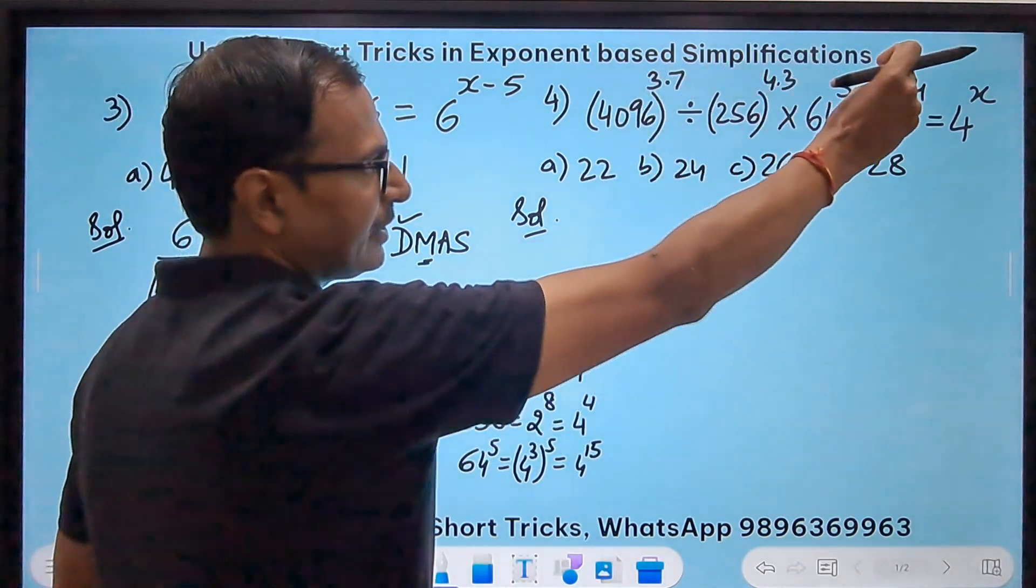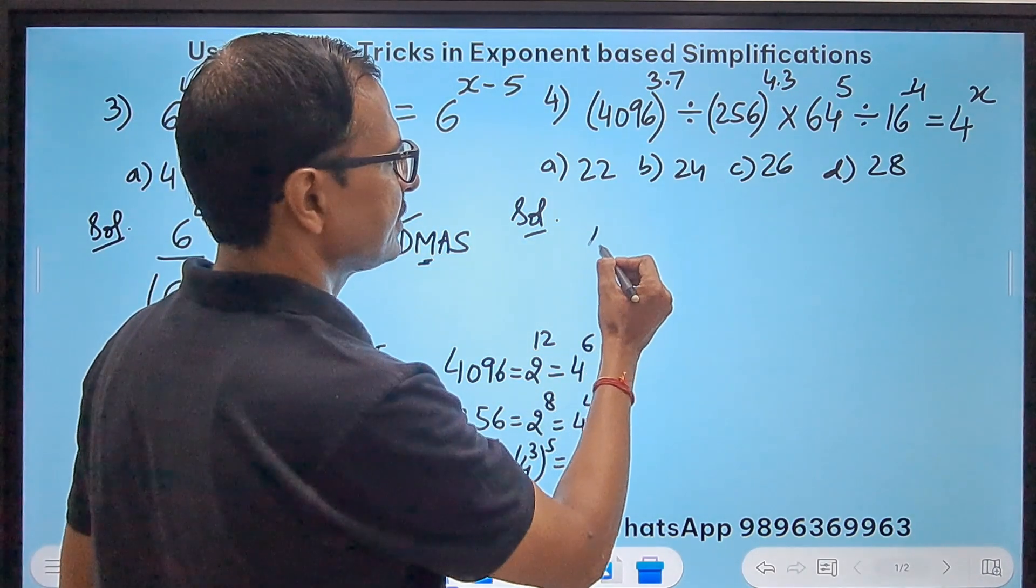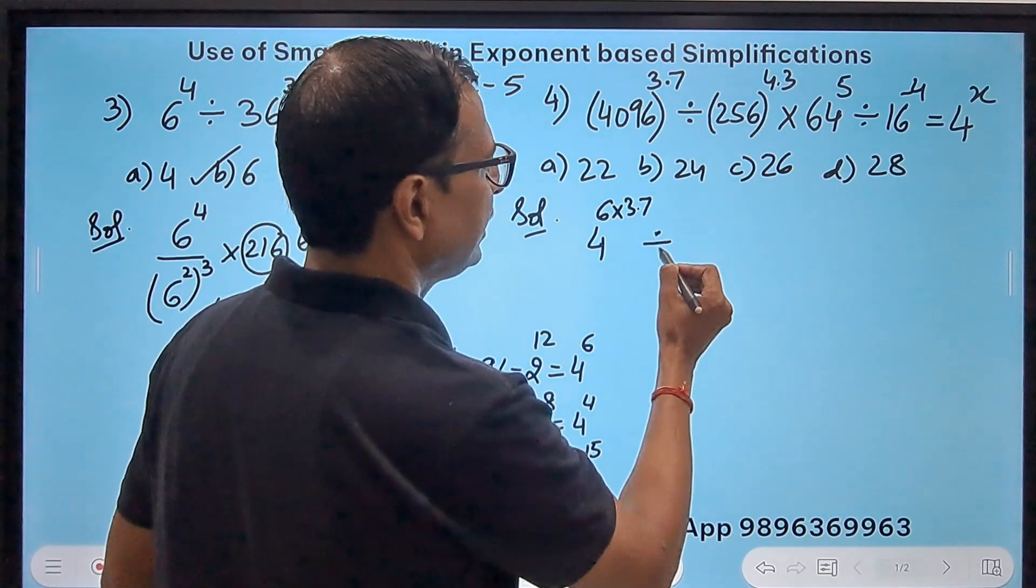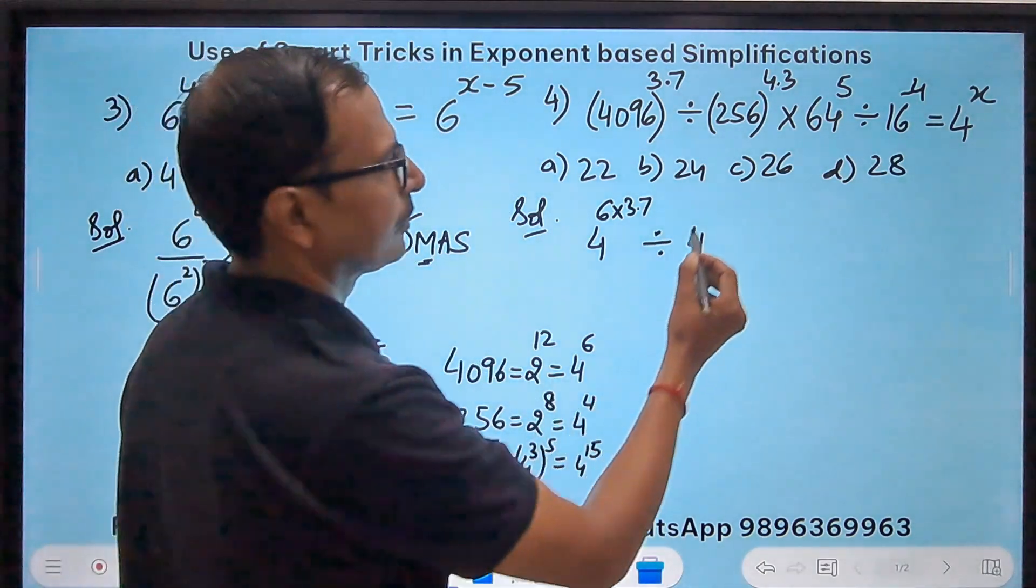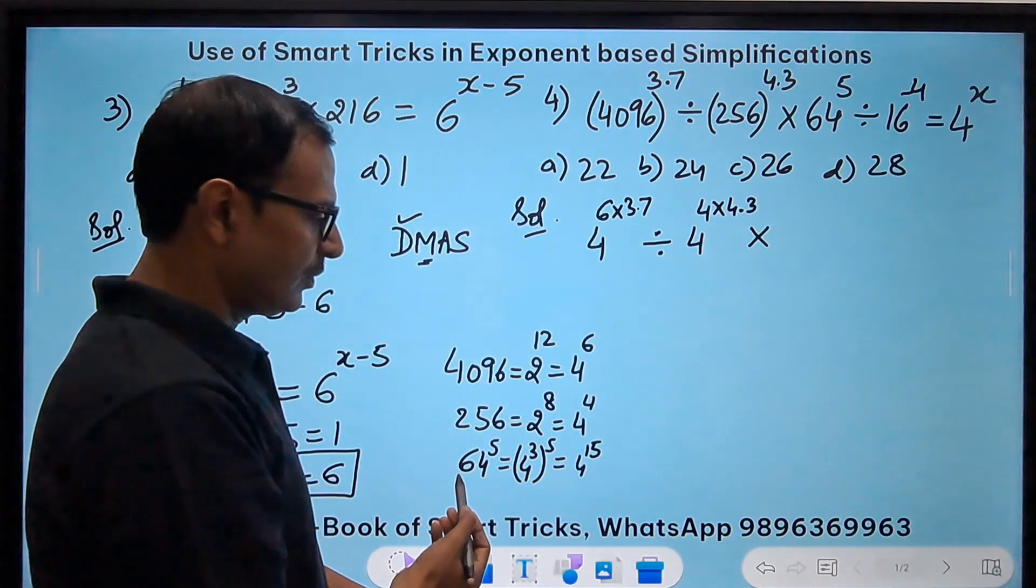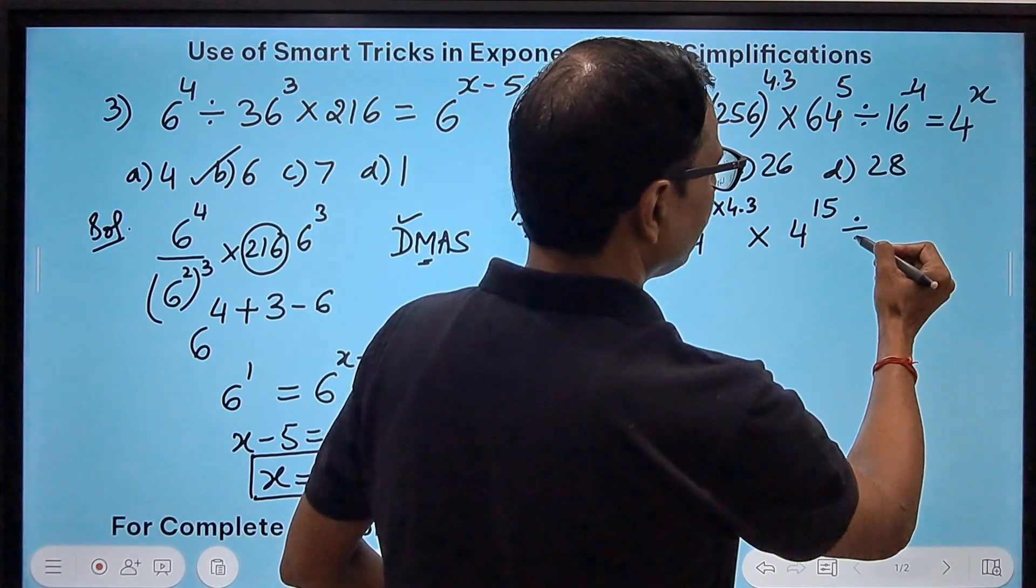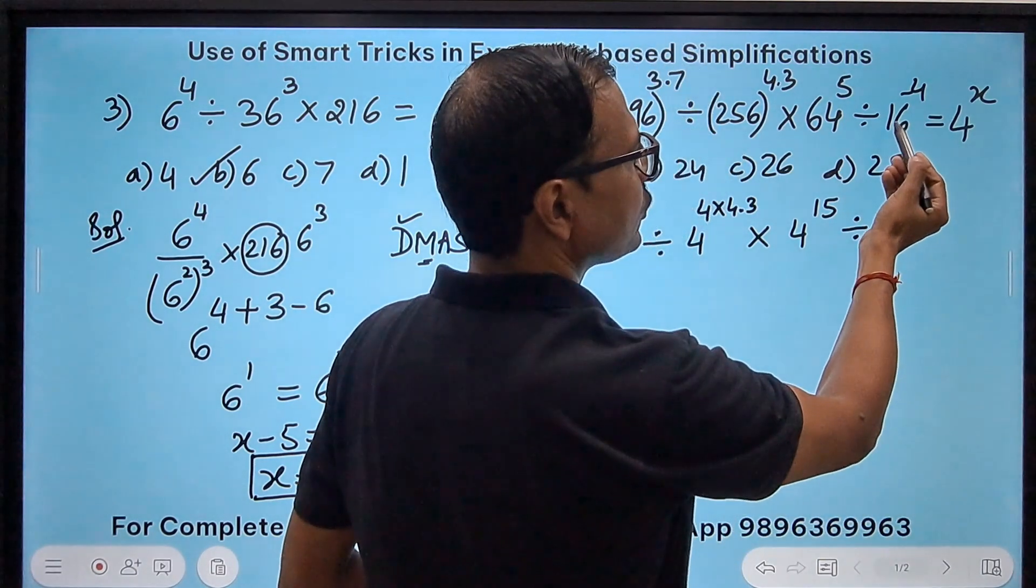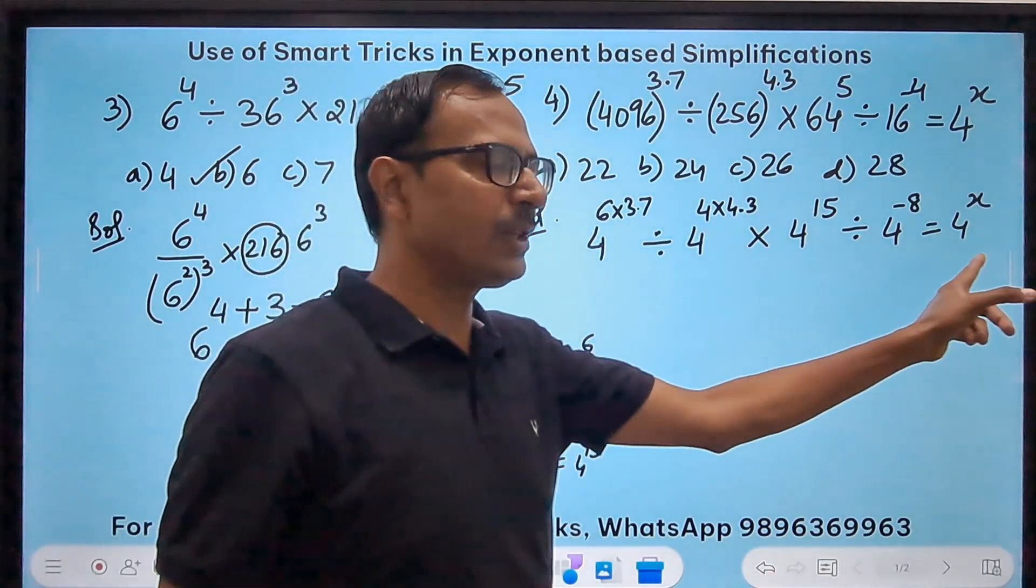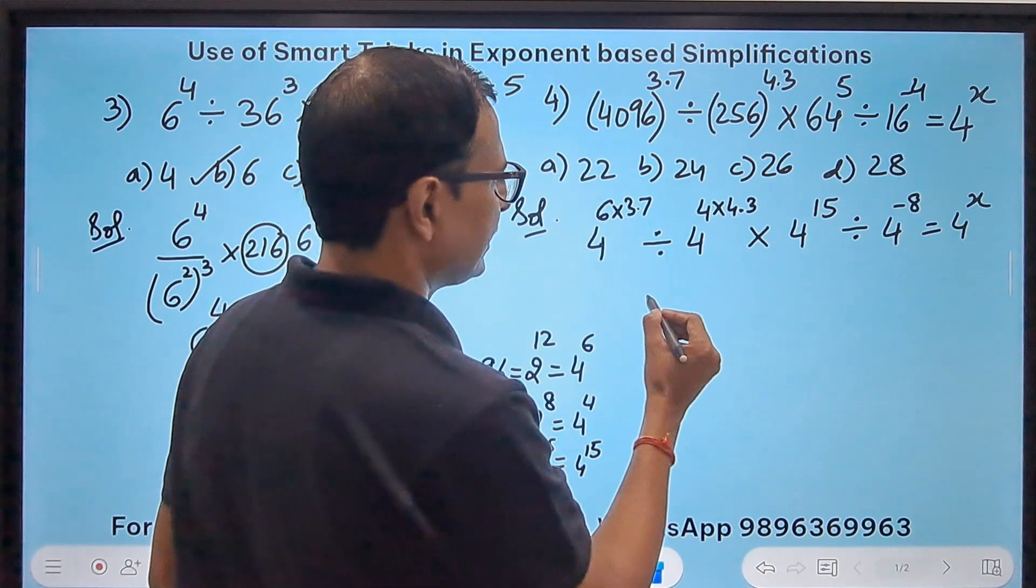Now let's input all these in the given simplification problem. 4096 is 4^6. So 6×3.7 divided by 4^4 times 4.3 times 64 is 4^15 and divided by 4^(2×-4 = -8) equals 4^x. Now see we have all the bases as 4. That makes the problem easy for us. How? Just multiply. See, this exponent minus this exponent that has to be done because there is a divide sign and we have a common base.